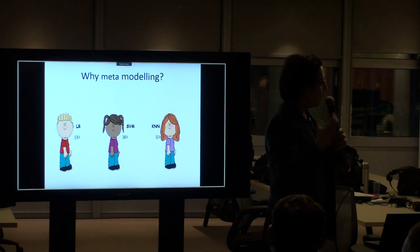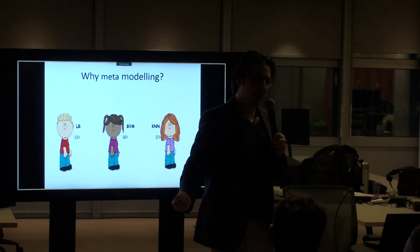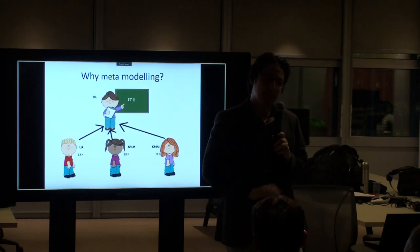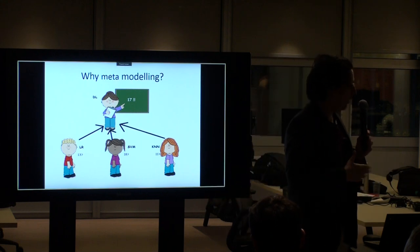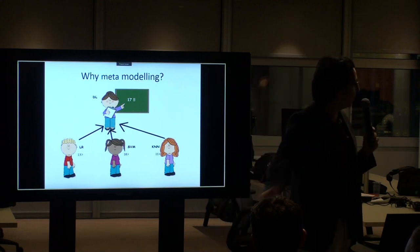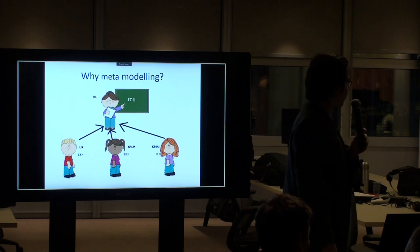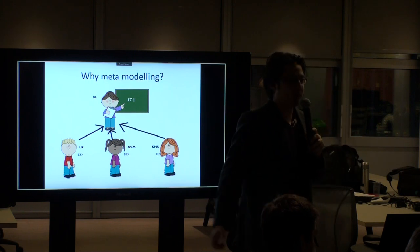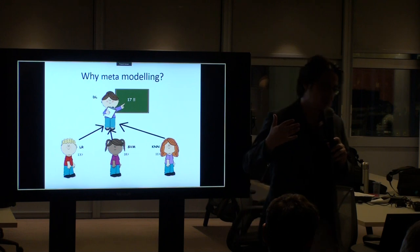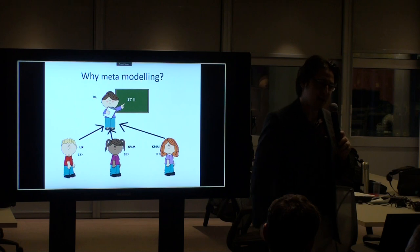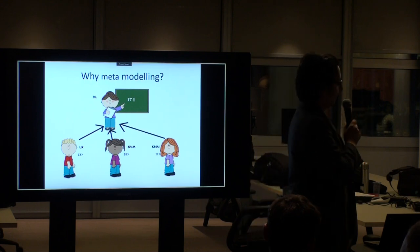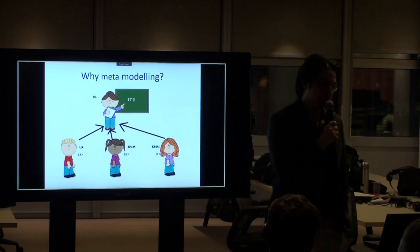But what if someone else made this decision — someone who knows the students well, knows their strengths and weaknesses, even without knowing the exact question? Let's say there's a teacher, Miss DL. She knows SVM is a master-class student whose father is a leader at a university of excellence for physics. She gives SVM a much higher weight and arrives at an answer of 17, hopefully better than the simple average.